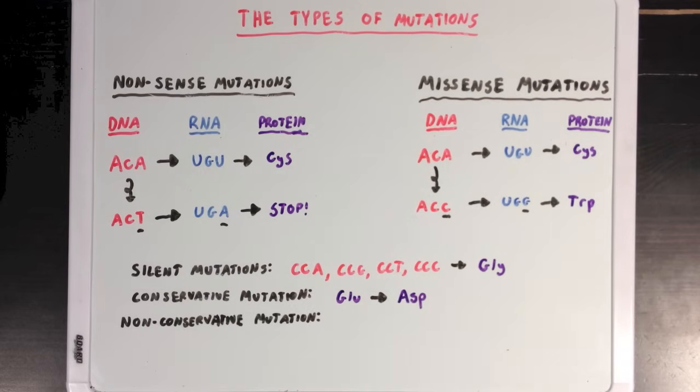Finally, a non-conservative mutation is one where the new amino acid is of a different type from the original. So here we have a serine amino acid, which is a small, polar amino acid, being replaced with phenylalanine, which is a large, non-polar, aromatic amino acid. And this would be an example of a non-conservative mutation since serine and phenylalanine are different types of amino acids.